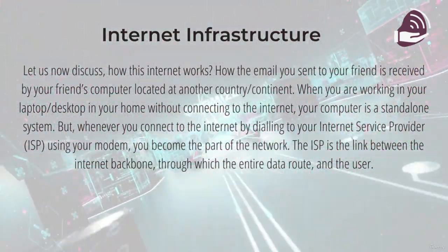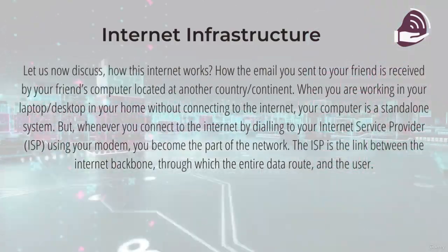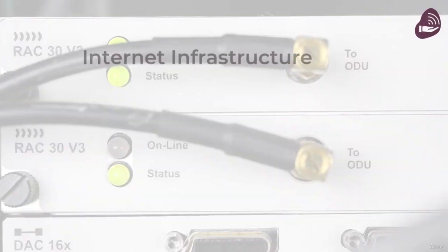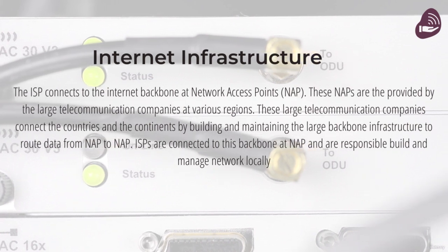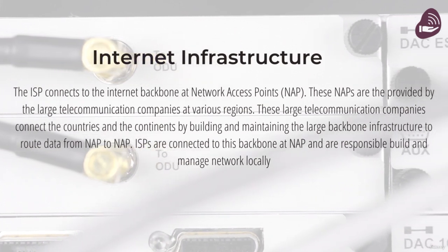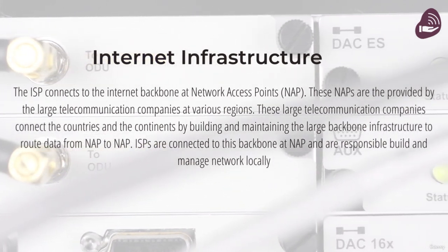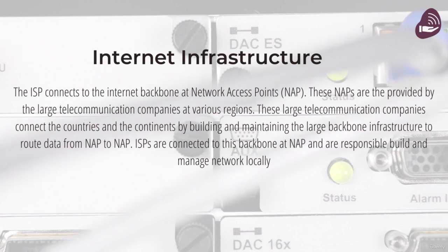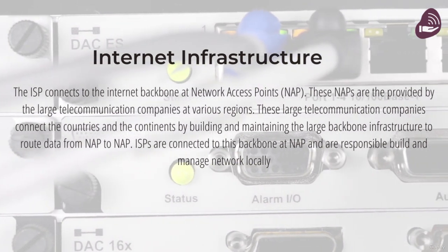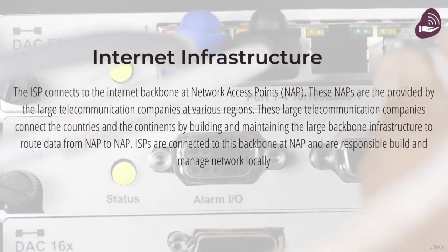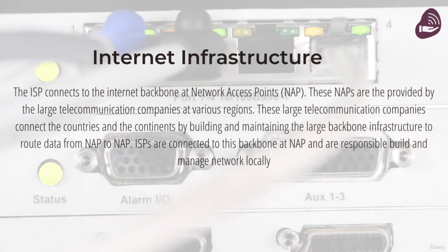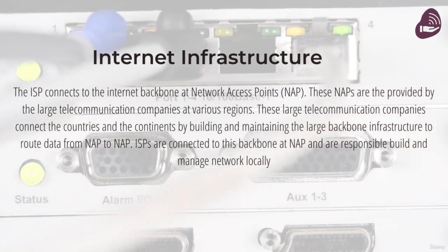you become a part of the network. The ISP is the link between the Internet backbone, through which all of the data comes, and the user. The ISP connects to the Internet backbone at Network Access Points, or NAPs. These NAPs are provided by large telecommunication companies at various regions. These large telecommunication companies connect the countries and continents by building and maintaining the large backbone infrastructure to route data from NAP to NAP. ISPs are connected to this backbone at the NAP and are responsible for building and managing the network locally.